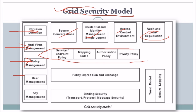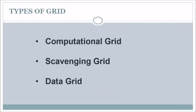There are various policies and rules being applied, including policy expressions and exchanges and binding securities. This is the grid security model. There are various types of grid, broadly divided into three types: the first is computational grid, the second is scavenging grid, and the third is data grid.